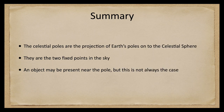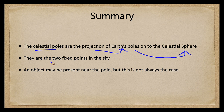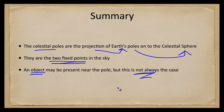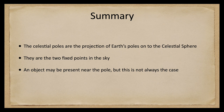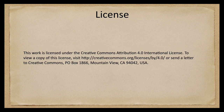So to summarize: the celestial poles are the projection of Earth's poles onto the celestial sphere. They are the two fixed points in the sky that everything seems to rotate about, and while there may be a star near the pole, that does not have to be the case. That concludes this lecture on the celestial poles. We'll be back next week for another topic on the celestial sphere — until then, have a great day everyone and I will see you in class.